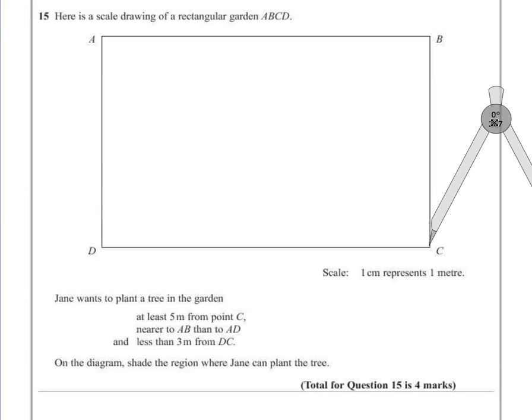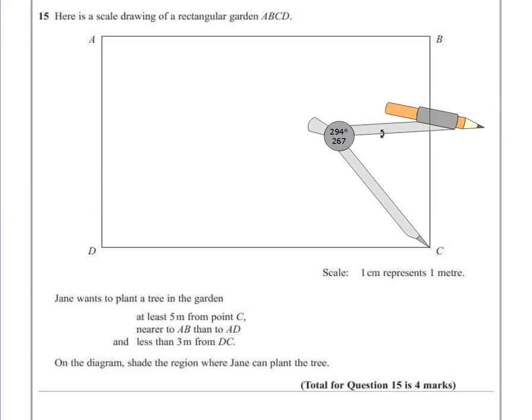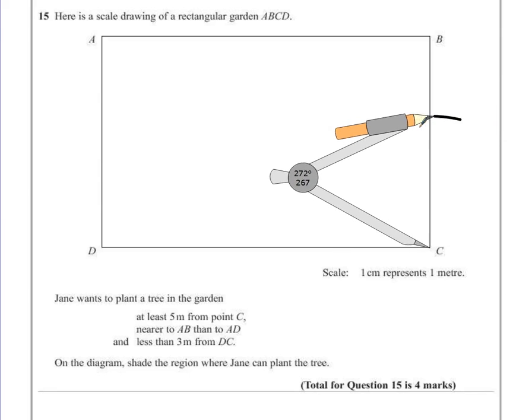You put the point of your compass on the point we're trying to measure from, and then draw your construction arc.